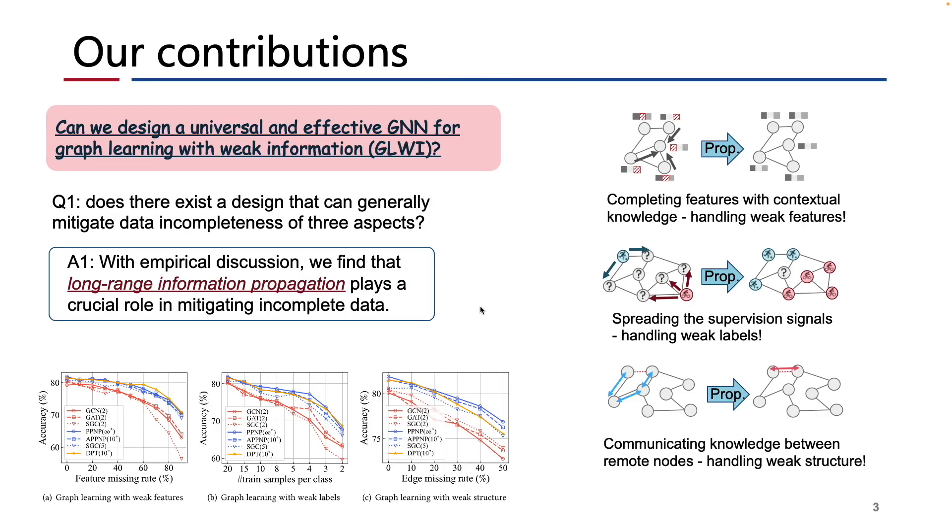Following this question, we first find that long-range information propagation plays a crucial role in mitigating incomplete data. That is, the long-range information propagation in GNN can benefit feature completion, supervision signal propagation, and structural leveraging.